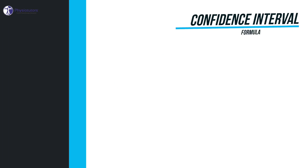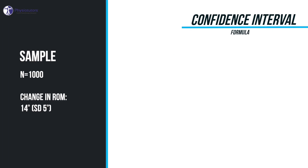This becomes clear when we look at the calculation of the confidence interval in a sample with a normal distribution. Let's say we have a sample of 1000 patients and we have found a change in range of motion in the shoulder of 14 degrees with a standard deviation of 5 degrees after our intervention.